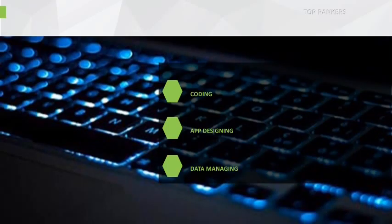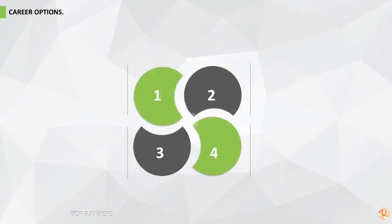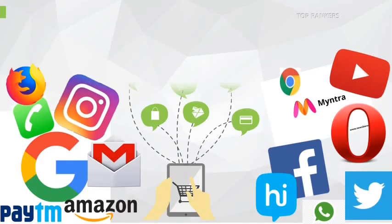These are the three main skills of a CS engineer: coding, app designing, and data managing. If you are perfect in these, you will have a successful CS career. There are four major career options in CS engineering: app developer, data analyst, software engineer, and software tester.